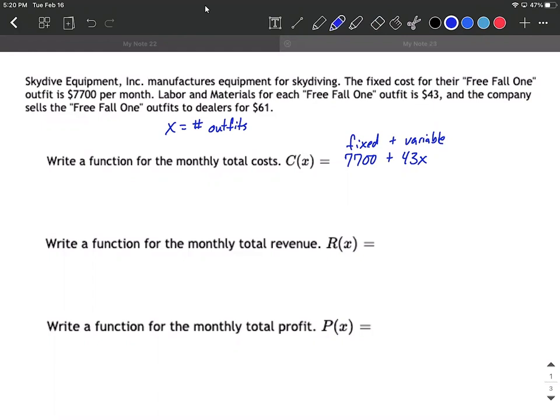So in this case, that's the money that's coming in. You can see from our last line here, it says that the company sells the Free Fall One outfits to dealers for $61. So for every outfit we sell, we're going to bring in $61. So we can say 61 multiplied by the number of outfits that we sell. That's X.